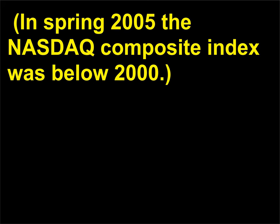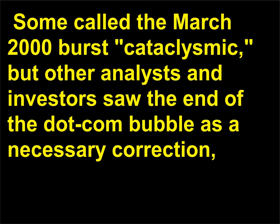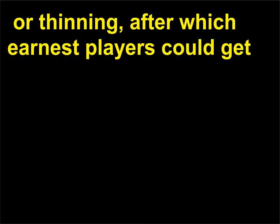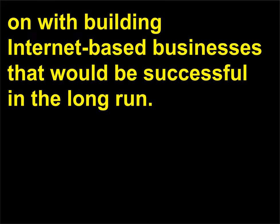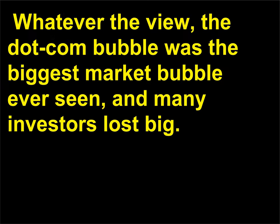In spring 2005 the Nasdaq composite index was below 2,000. Some called the March 2000 burst cataclysmic, but other analysts and investors saw the end of the dot-com bubble as a necessary correction, or thinning, after which earnest players could get on with building internet-based businesses that would be successful in the long run. Whatever the view, the dot-com bubble was the biggest market bubble ever seen, and many investors lost big.